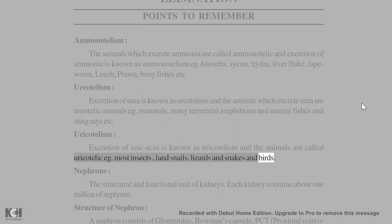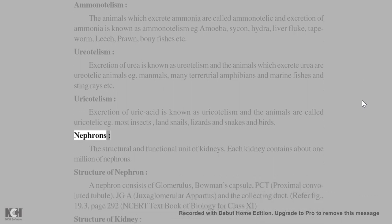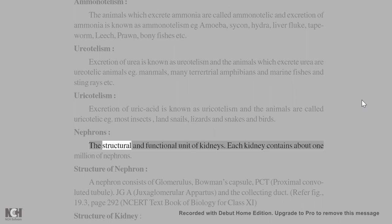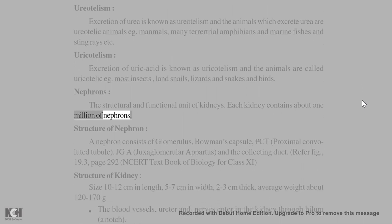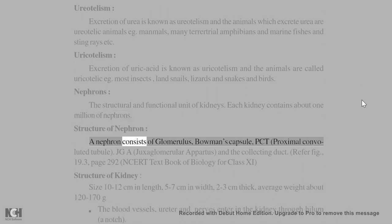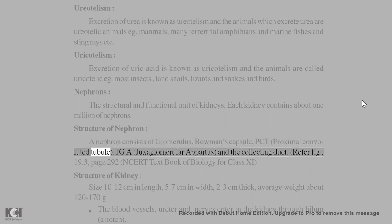Snakes and birds are also uricotelic. Nephrons are the structural and functional unit of kidneys. Each kidney contains about 1 million nephrons. A nephron consists of a glomerulus, Bowman's capsule, PCT (proximal convoluted tubule), JGA (juxtaglomerular apparatus), and the collecting duct.